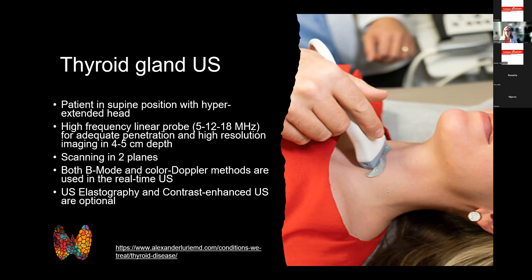The thyroid gland is usually examined with a linear probe requiring high frequency. Depending on neck size and thyroid location, mid-range frequencies around 12–14 MHz are used, but reaching up to 18 MHz can be very beneficial for adequate delineation of superficial parts and good penetration into depth. The average examination depth is four to five centimeters.